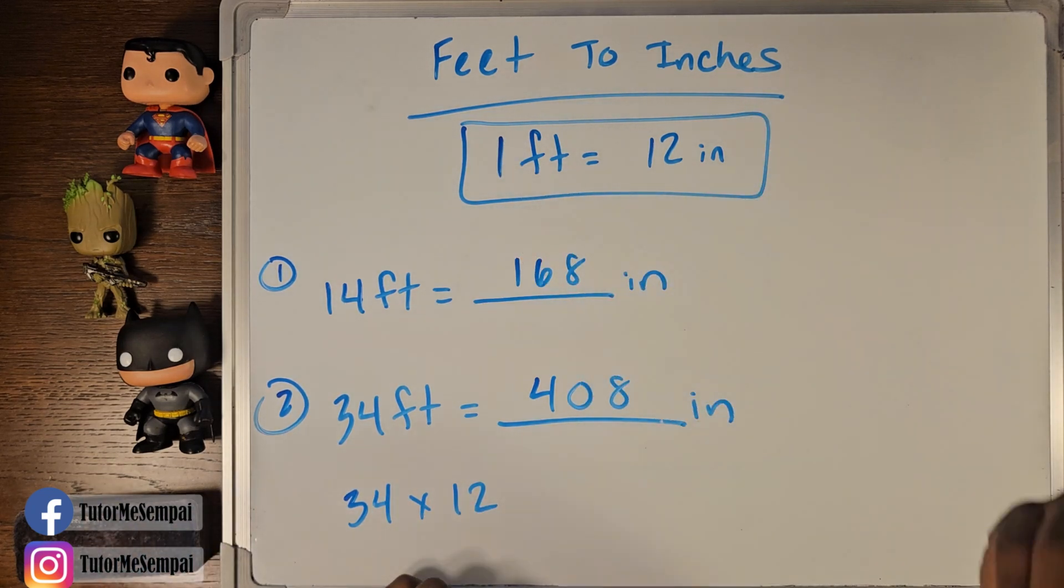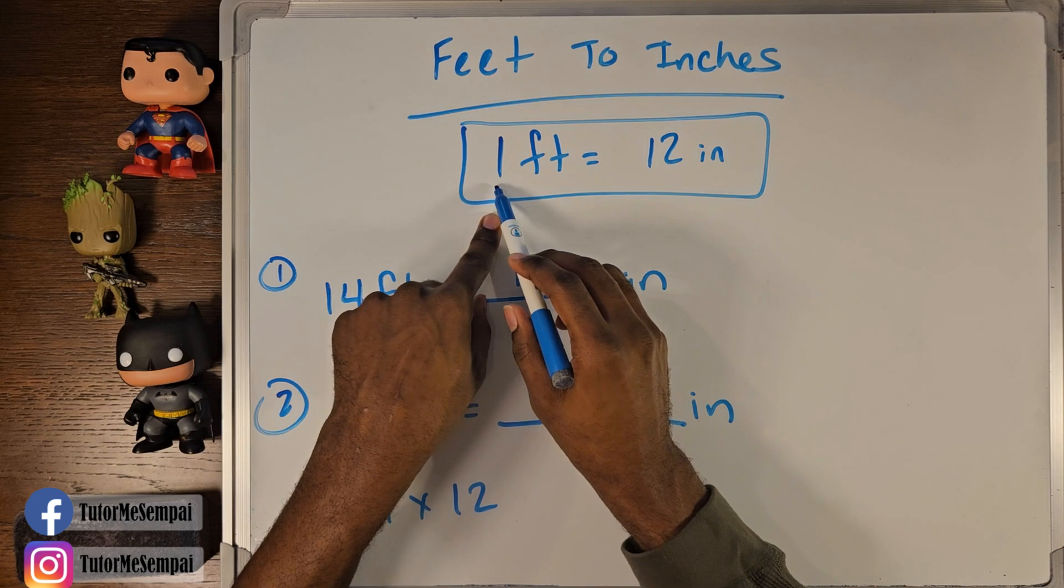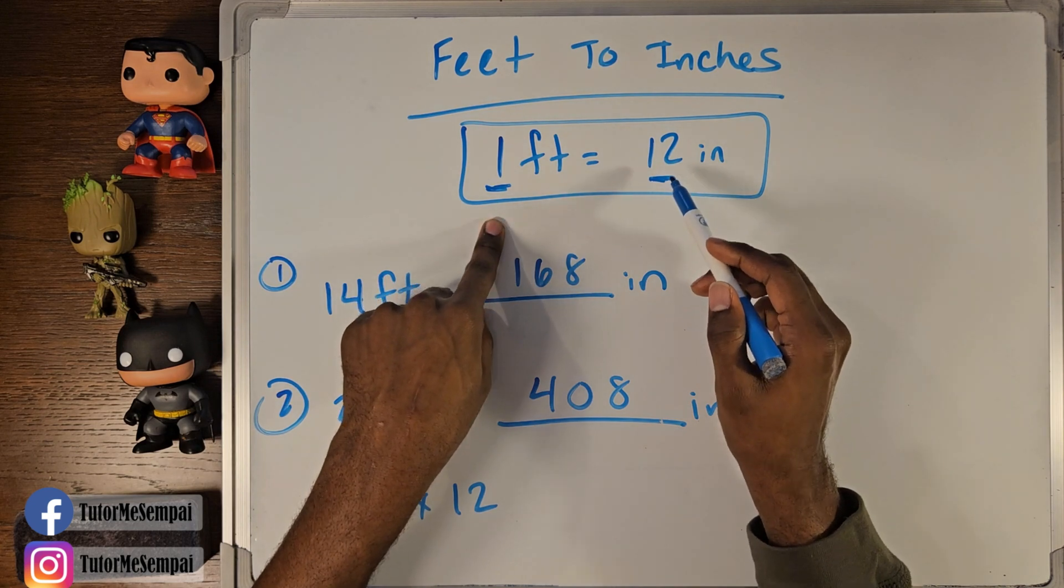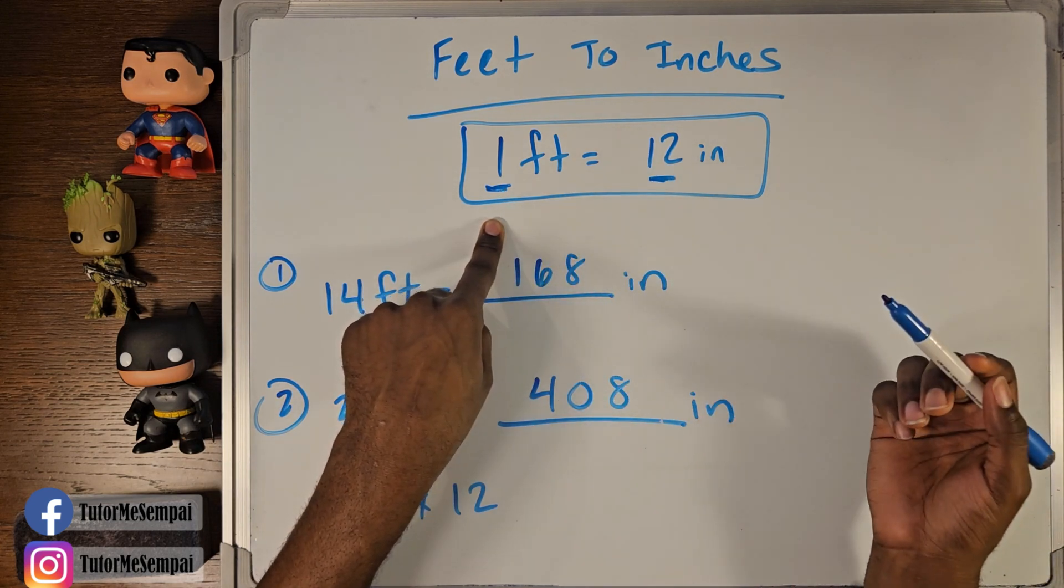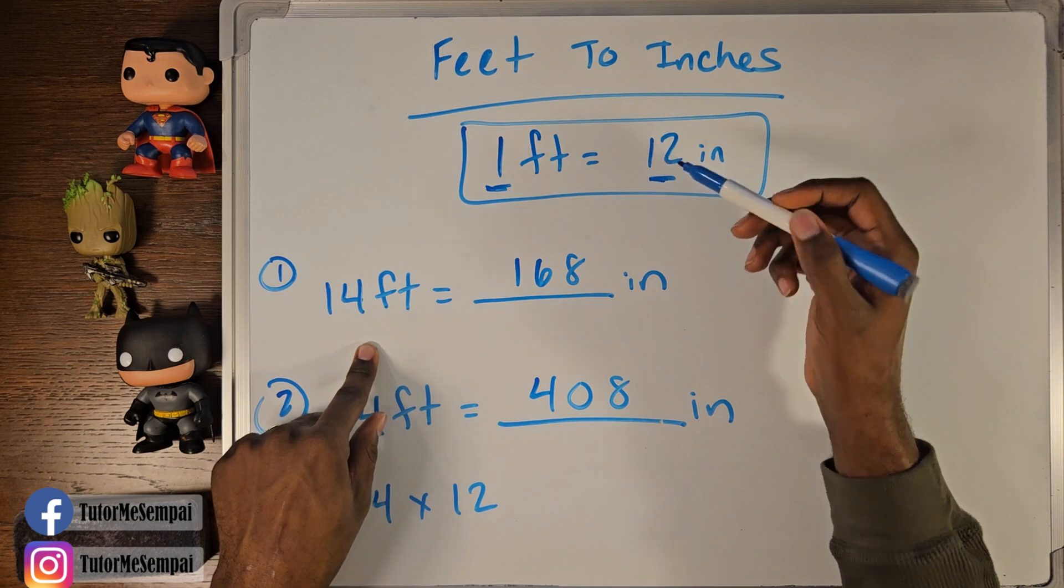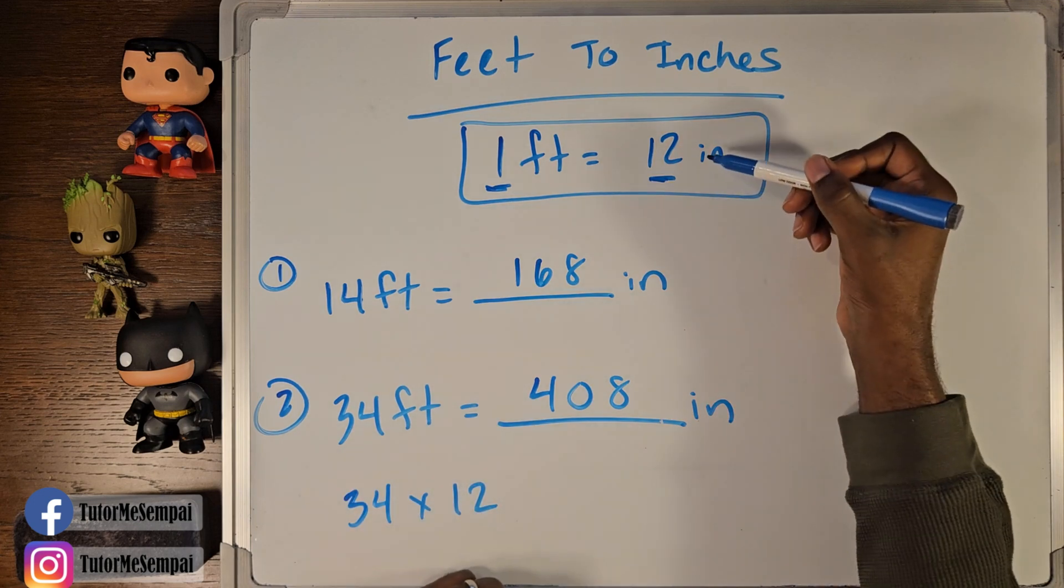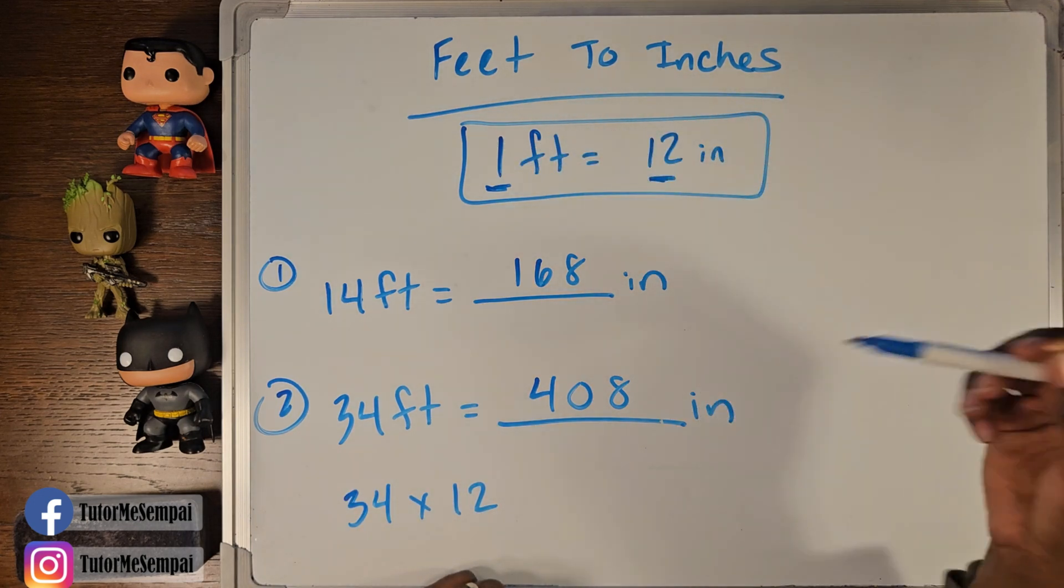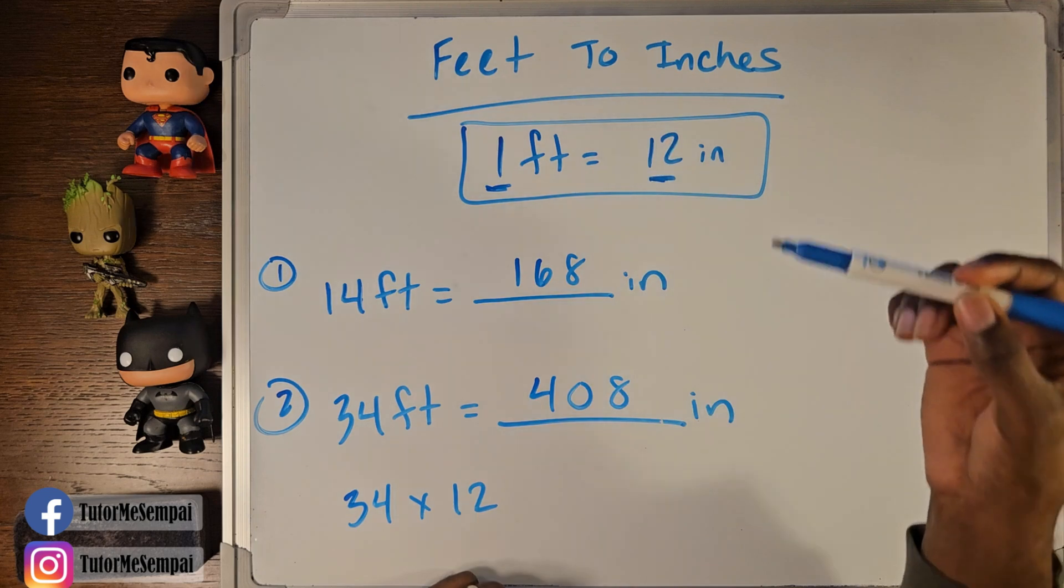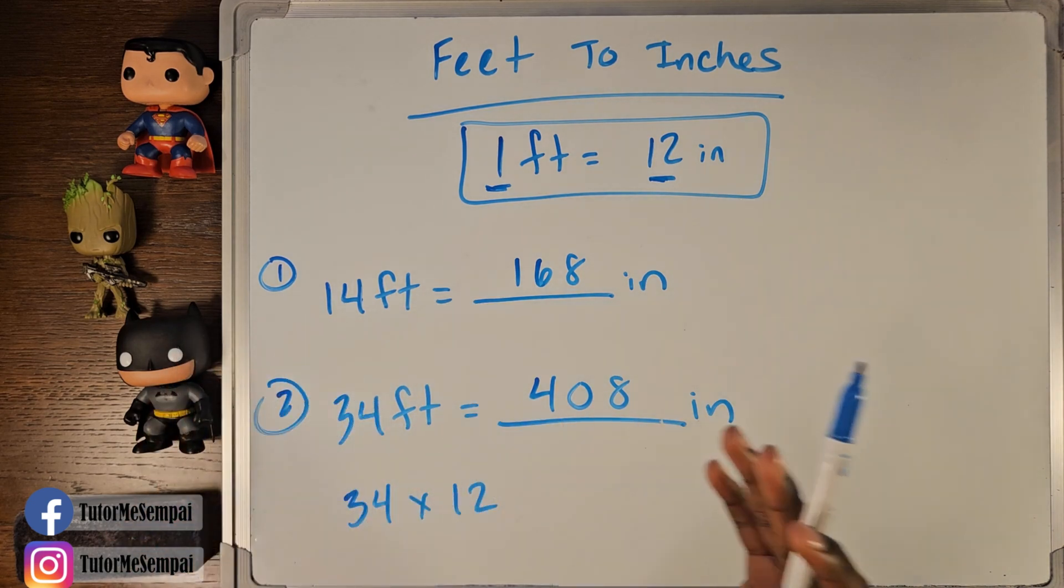Feet to inches, you multiply. You multiply because you're going to want a bigger number than what you started with. Notice that you have 1 and 12 here. Which number is bigger? 12. 12 is going to be bigger than 1. So if you're converting feet to inches, you want your inches to have a bigger number than your feet. That's why we multiply. And if you're going from inches to feet, you're going to divide because 1 is a smaller number. So by dividing, we're going to get a smaller number than what we started with. So that's how we make sure we're keeping the right operation for what we're trying to do.